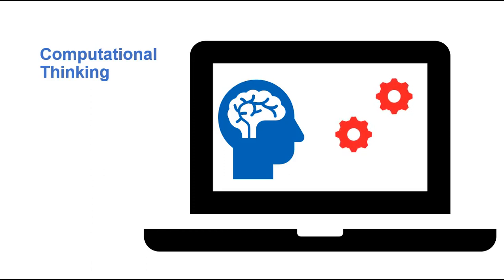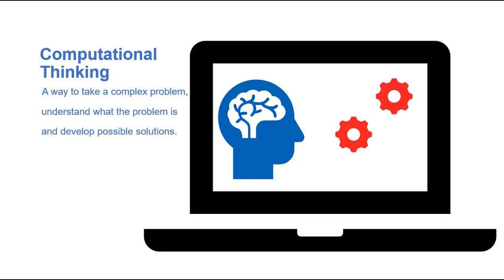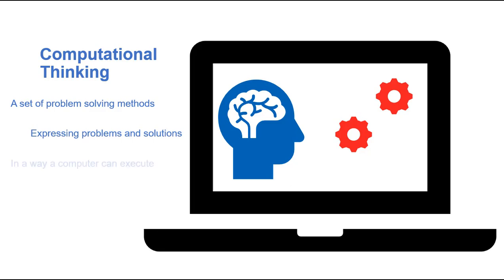We'll start with computational thinking. Computational thinking is a way to take a complex problem, understand what the problem is, and develop possible solutions. It's best to think of computational thinking as a set of problem-solving methods that express problems and solutions in ways that a computer could execute.